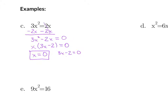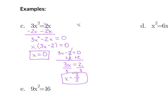For the second factor, add 2 to both sides to get 3x equals 2, then divide both sides by 3 to get x equals 2 thirds. So our two solutions are x equals 0 and x equals 2 thirds. Be sure that you do include x equals 0 in your final solution and don't lose it.